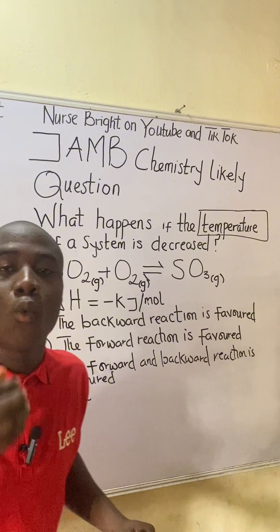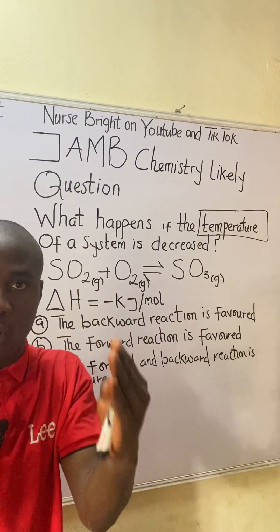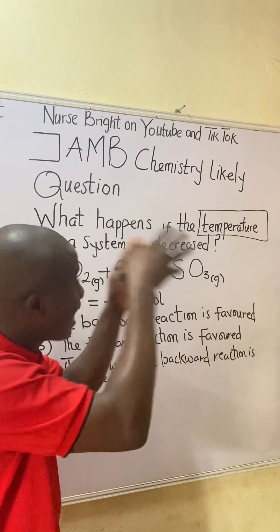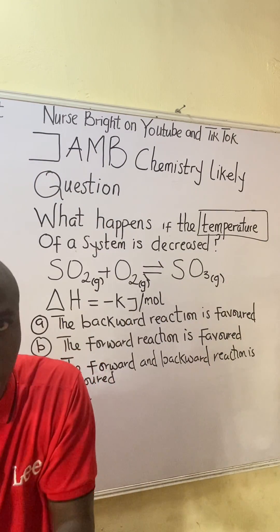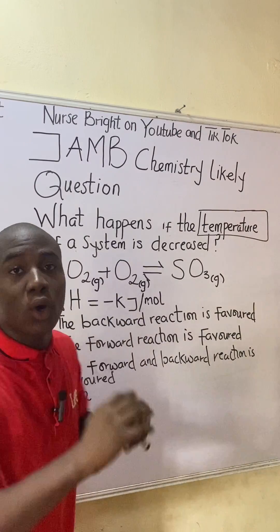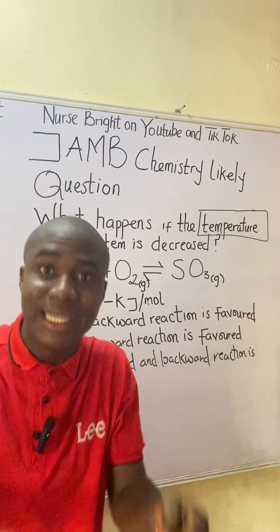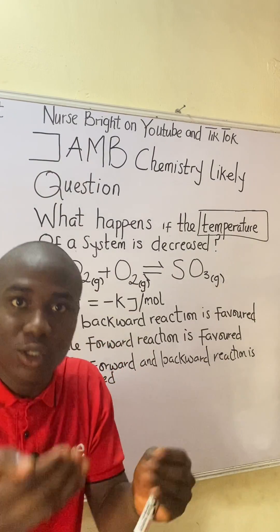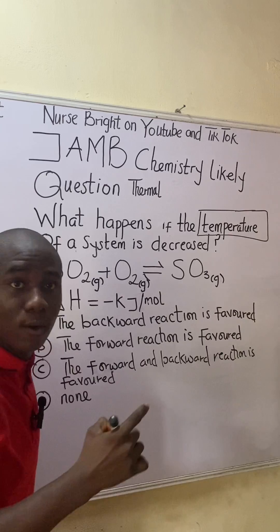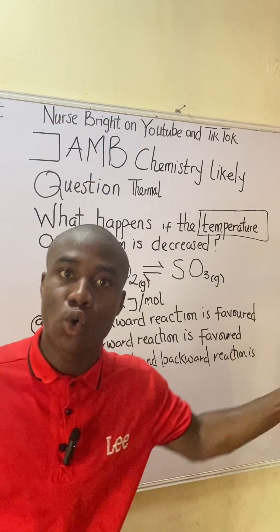We have to understand how temperature affects a reaction, because there are different patterns by which this external constraint affects different reactions. Whenever we talk about temperature, heat comes to mind — temperature brings about heat. A reaction that is influenced or powered by heat is called a thermal reaction. A reaction that is influenced by light is called a photochemical reaction.